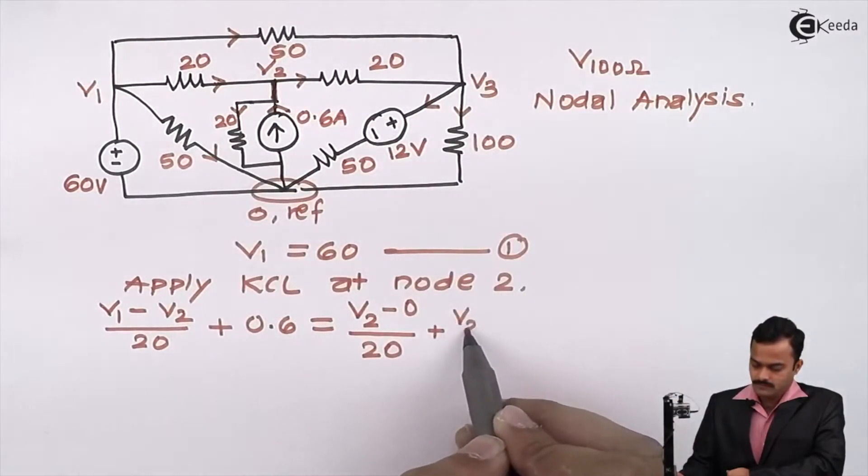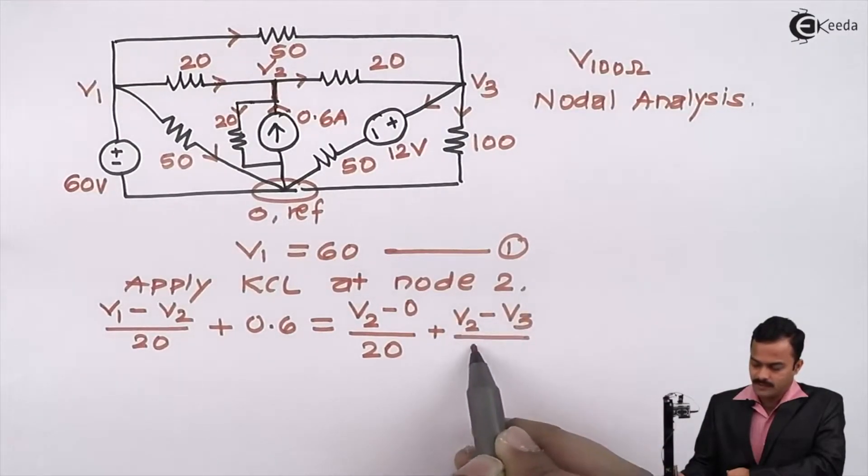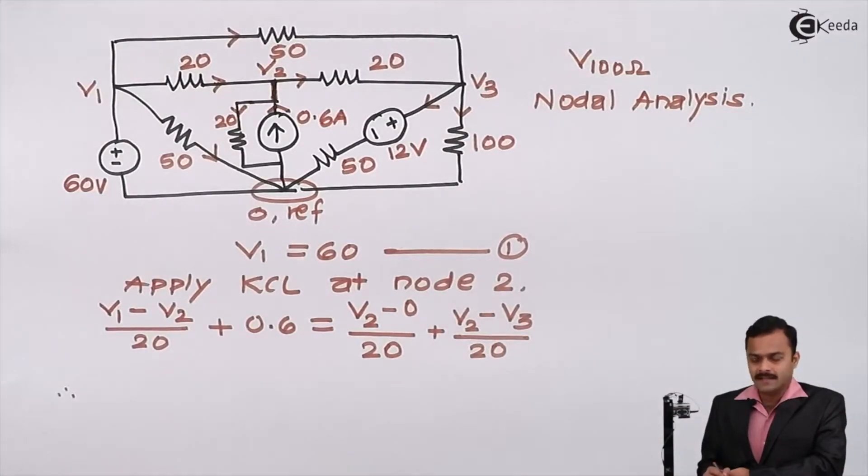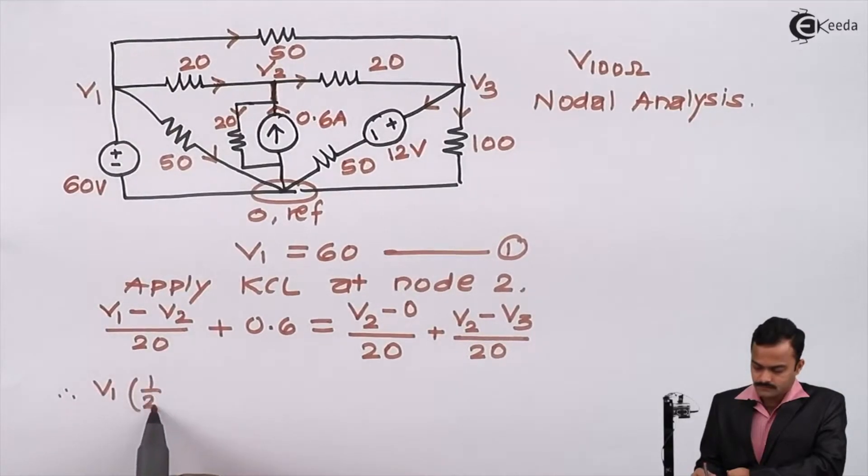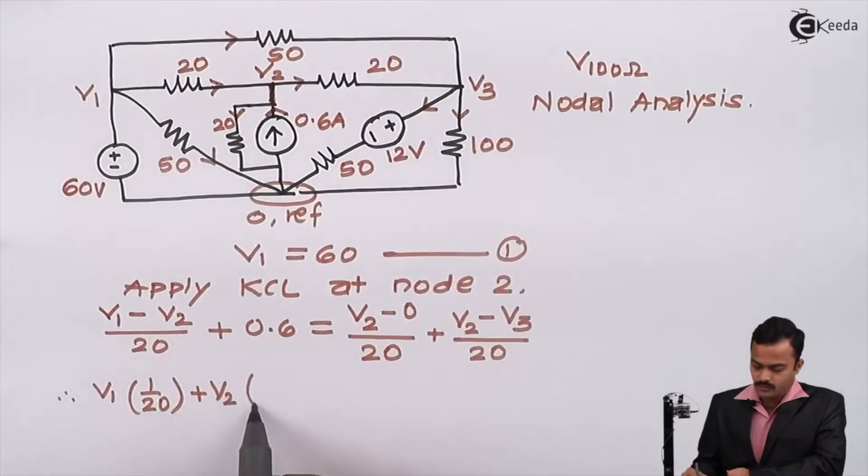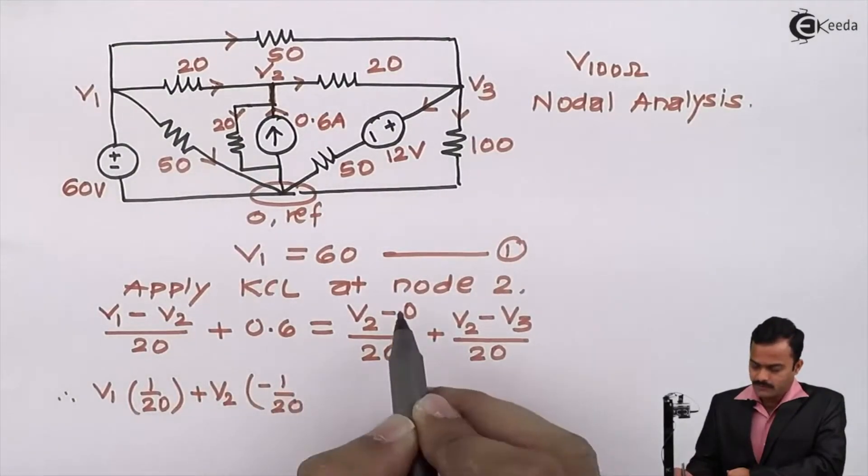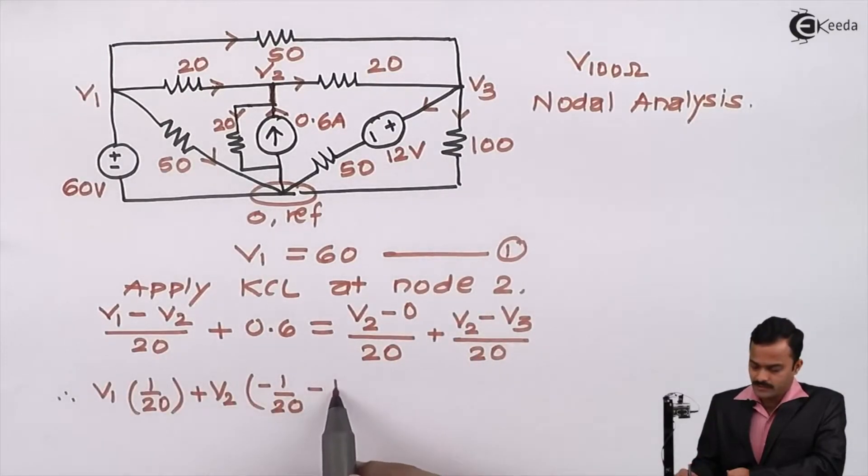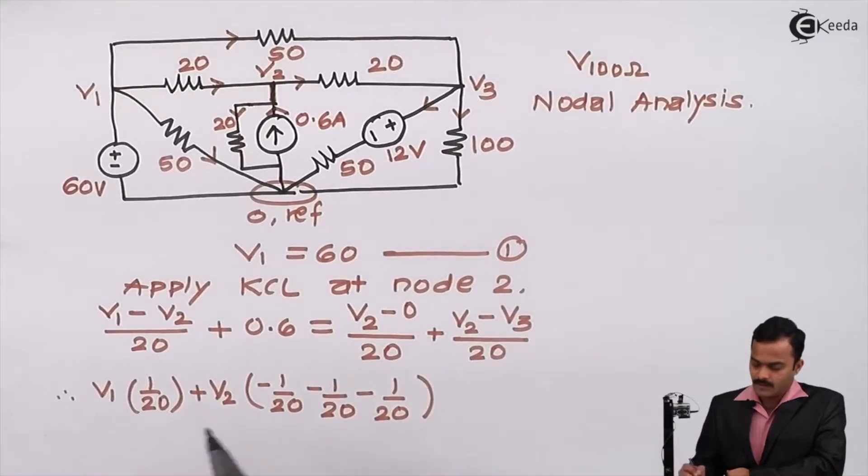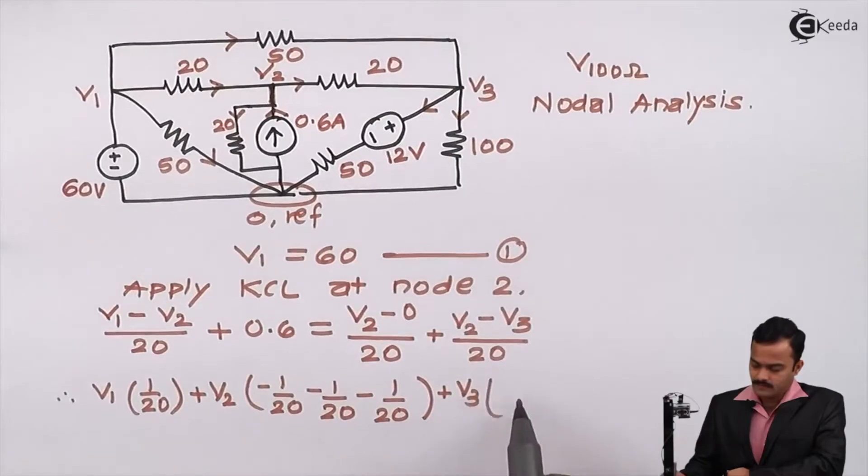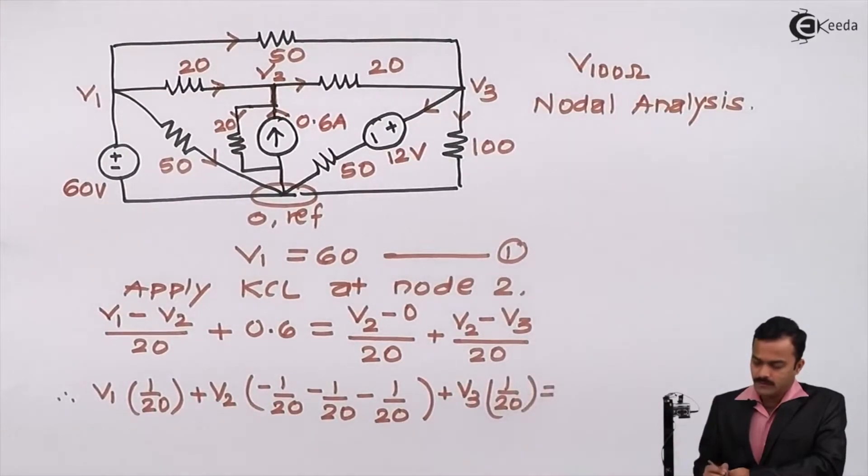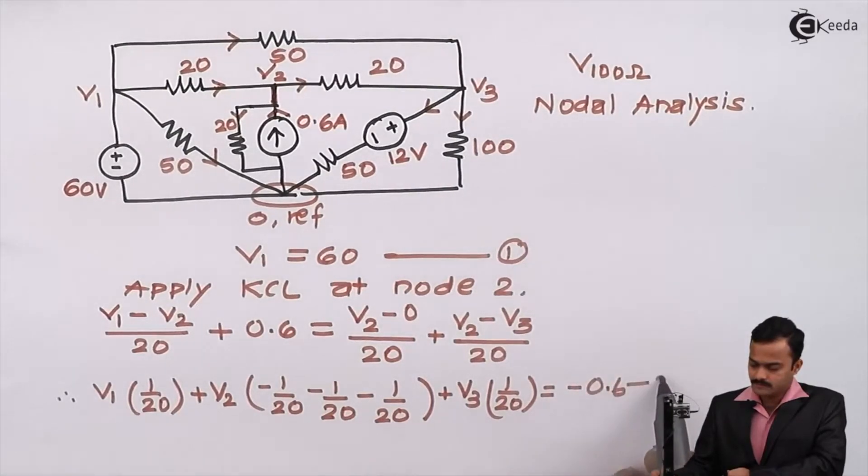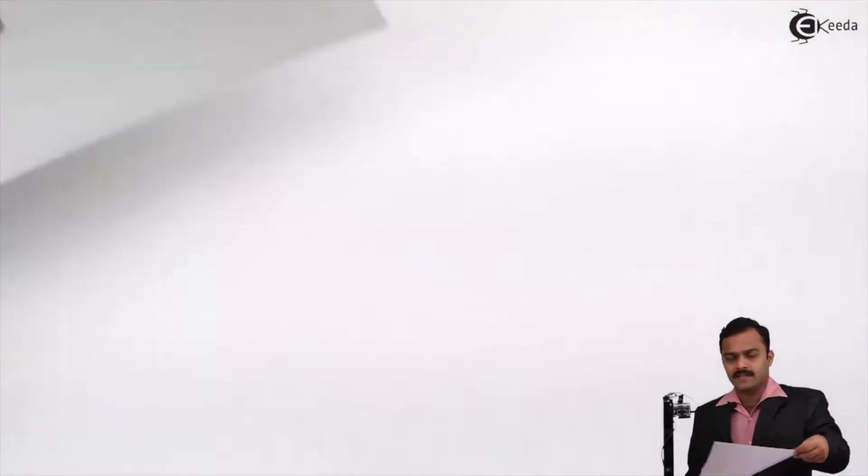Let's rearrange the terms. V1, 1 by 20, plus V2 coefficients are minus 1 by 20. If I take these terms on this side of equation I will get one more minus 1 by 20 and minus 1 by 20 once again. Plus V3, 1 by 20, equal to the only constant is 0.6 on this side. If I take to the other side of equation it will be minus 0.6. So this will be equation number 2. Similar way I can apply KCL at node 3.